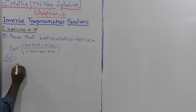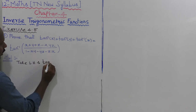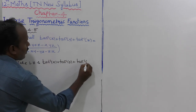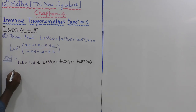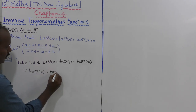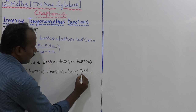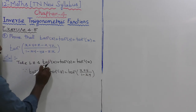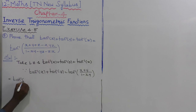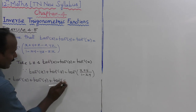So now let us take the LHS: tan inverse of x plus tan inverse of y plus tan inverse of z. For the first two terms, we apply the formula — tan inverse of x plus tan inverse of y equals tan inverse of x plus y, the whole divided by 1 minus xy.